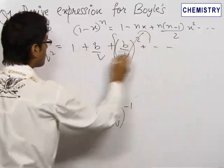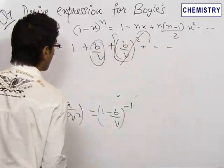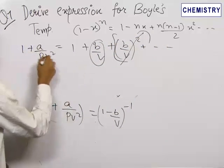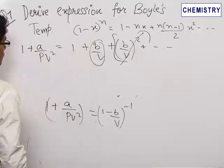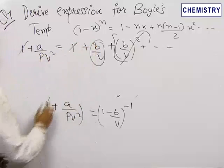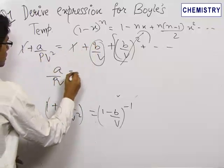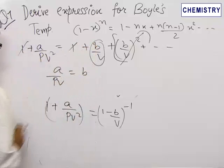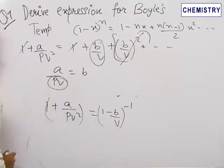Putting n equals minus 1 in this formula, these are all negligible terms as compared to B upon V. So, we neglect all of these. So, we get 1 plus A upon PV square is equal to 1 plus B upon V which gives us A upon PV is equal to B and we know that PV is equal to RT.